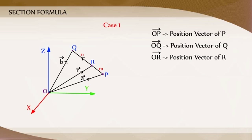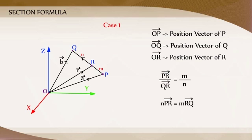Given that vector PR by vector RQ is equal to M divided by N. That is, N times PR vector is equal to M times RQ vector.